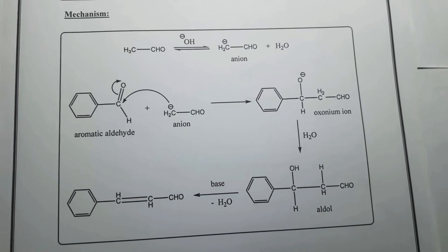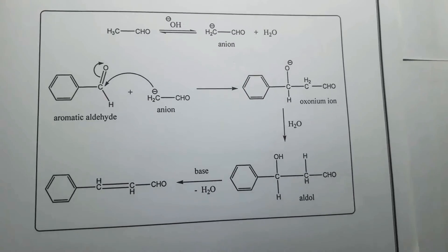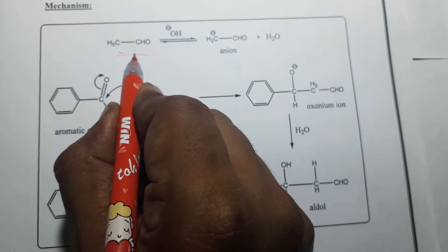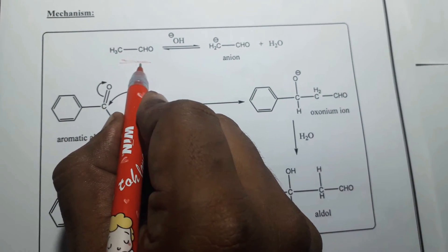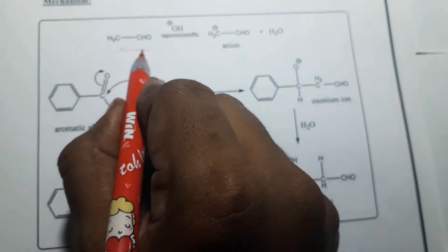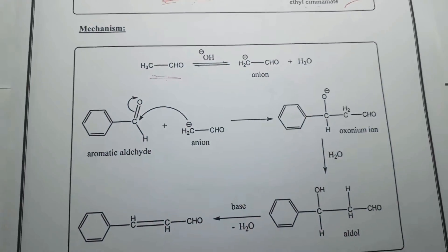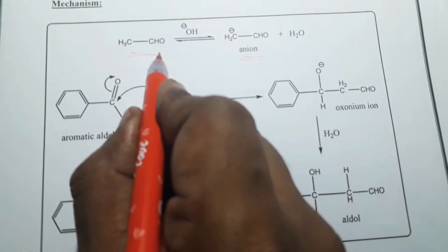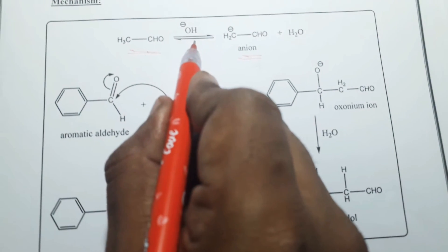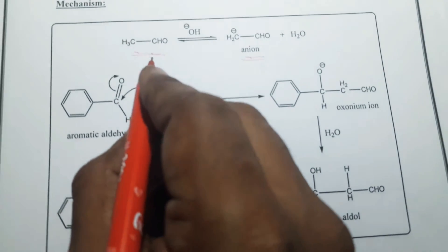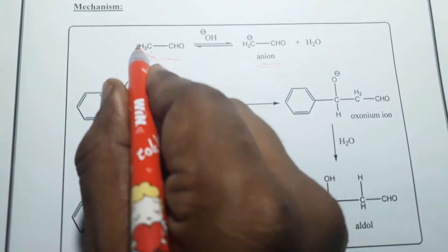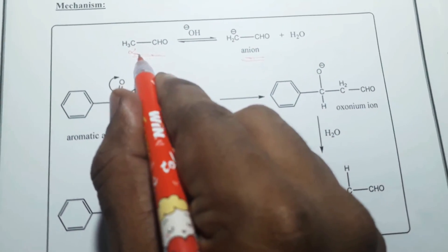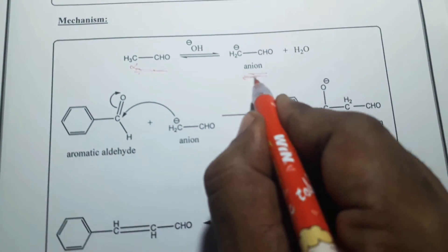Coming to the mechanism of this Claisen-Schmidt condensation reaction. In the first step, whatever aliphatic aldehyde, ketone, or ester is used in the reaction, in the presence of the base it is converted into the respective anion. The base abstracts the proton from the alpha-carbon atom, which leads to producing the respective anion.